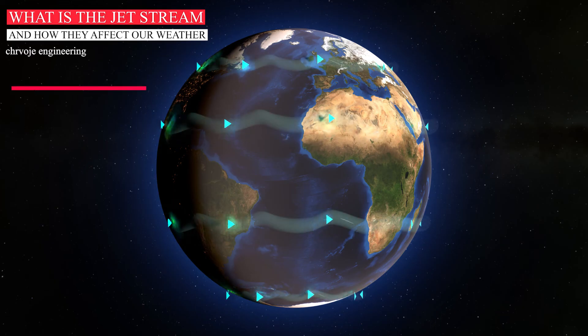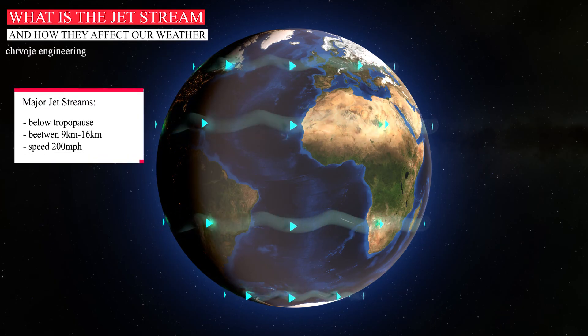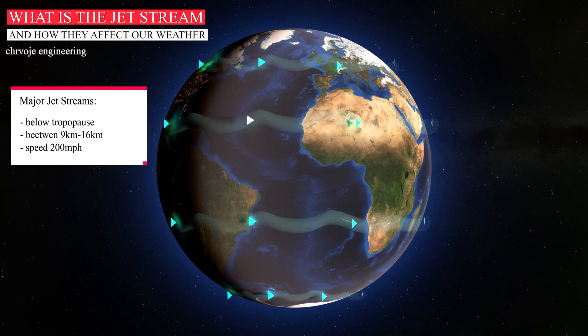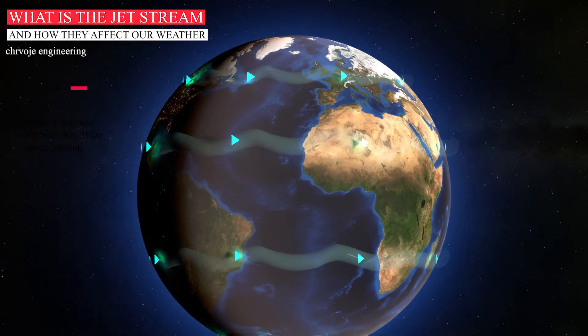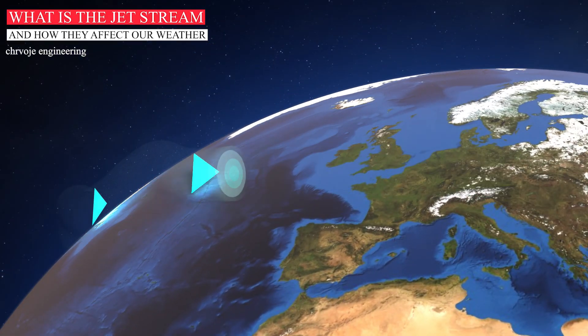The major jet streams that circle the Earth are found just below the tropopause, at a height ranging from 9 to 16 kilometers and can reach speeds of over 200 miles per hour. They're hundreds of kilometers wide by only a few kilometers deep, so often described as a ribbon of very strong winds.